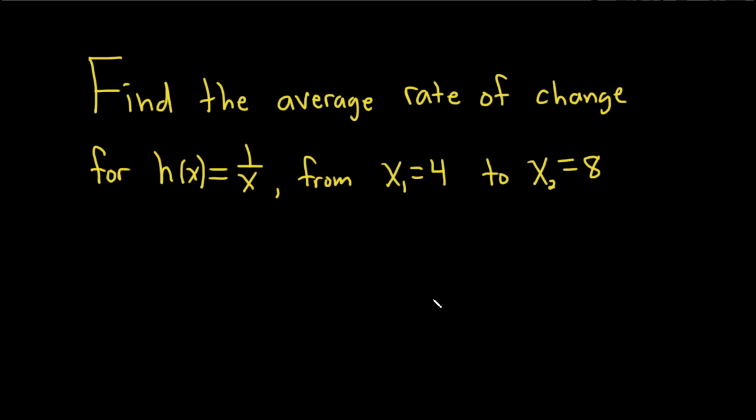In this problem, we have to find the average rate of change of this function, h of x equals 1 over x, from x1 equals 4 to x2 equals 8. Let's go ahead and work through it.